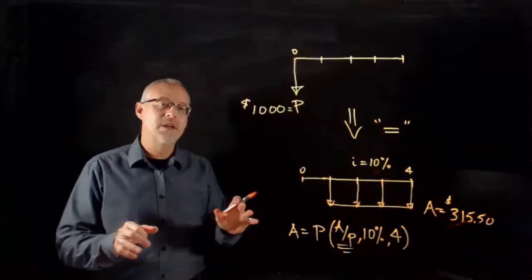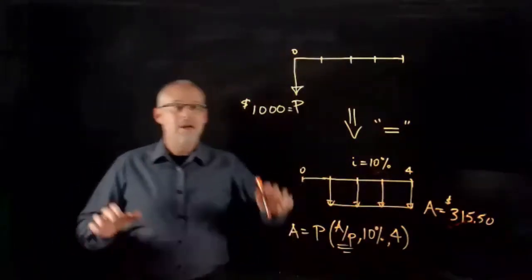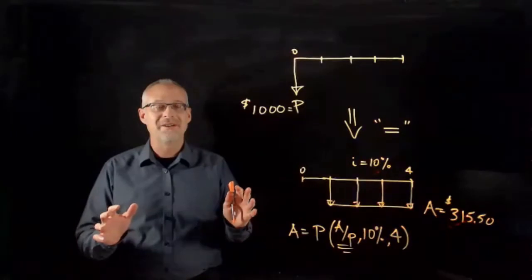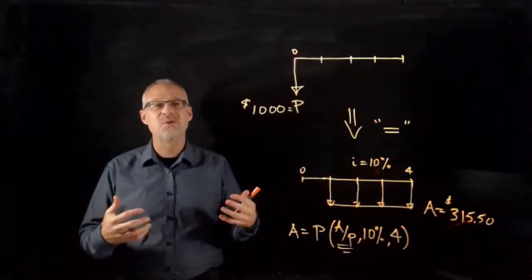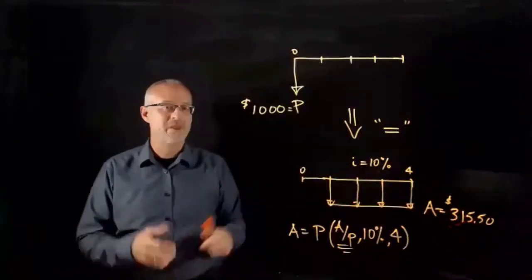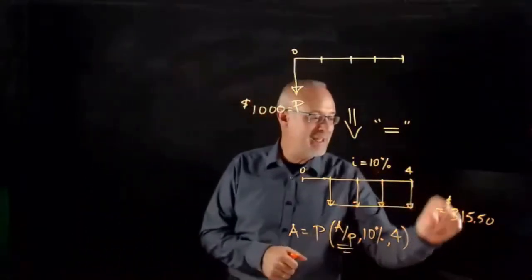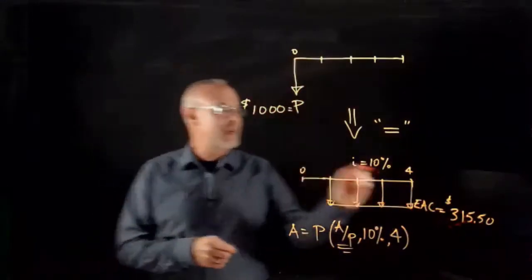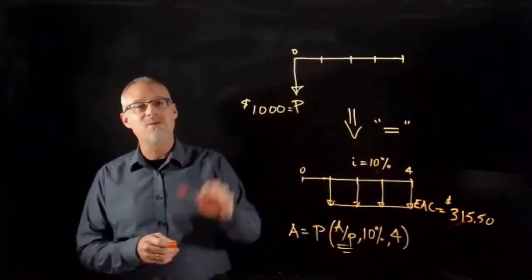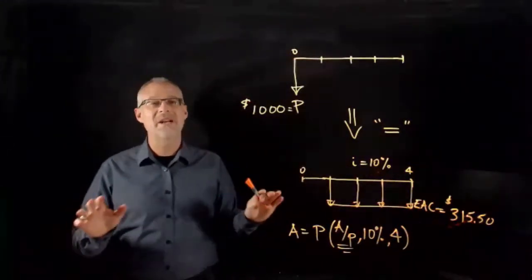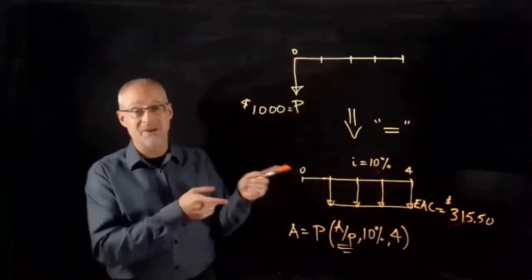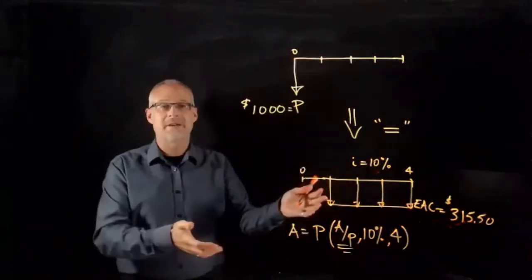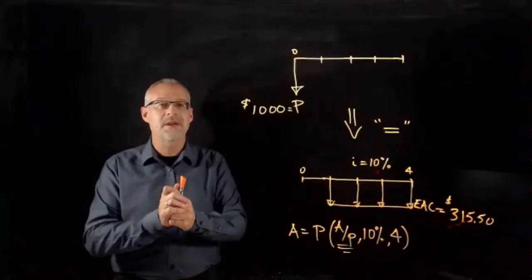Jargon alert — remember at the beginning of the course we introduced words specific to this field. Here's the jargon: we don't call this an A anymore. We call it an EAC, which stands for equivalent annual cost. We're taking a purchase price of an asset and spreading it out over time.